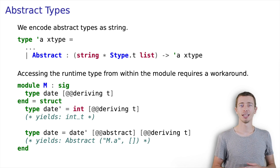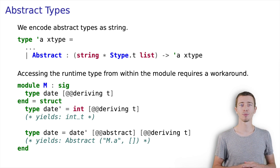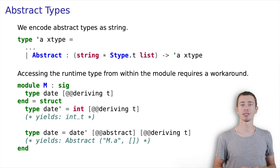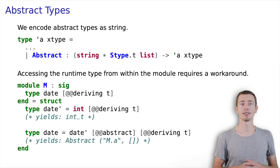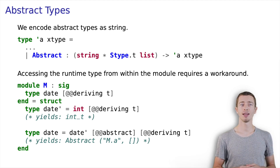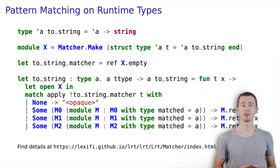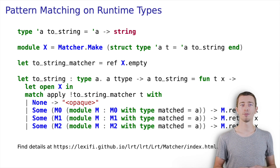One option is shown here. We use it to create a coordinate from a string-float ad-hoc list. That's it for records. Let's have a look at abstract types, where we have to deal with a conceptual problem. Runtime types are designed for looking into the type definition, while abstract types do exactly the opposite. We try to resolve this by encoding abstract types as strings. We provide a matching mechanism to handle abstract types at runtime.